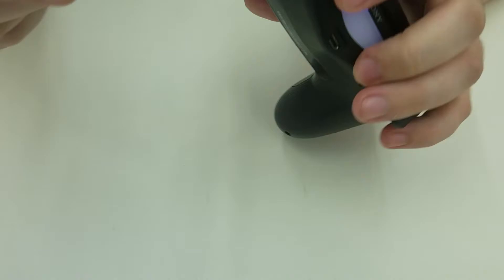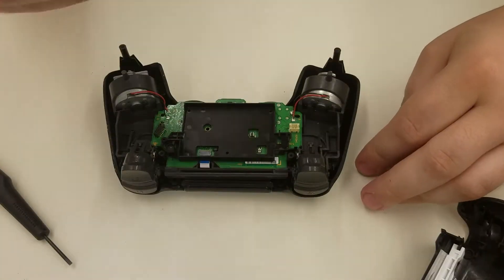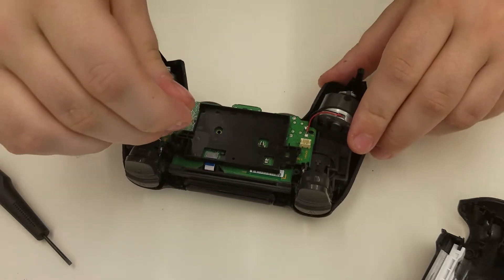Now we're going to separate these shells. You want to work your way down to the bottom of these and make sure you do both sides. There's a silver screw in this little hole. That's the only silver screw in the controller.